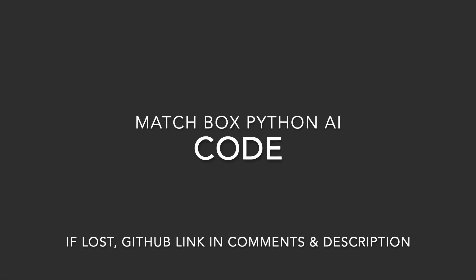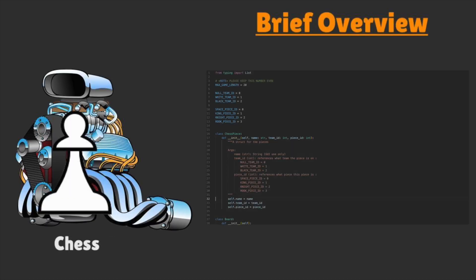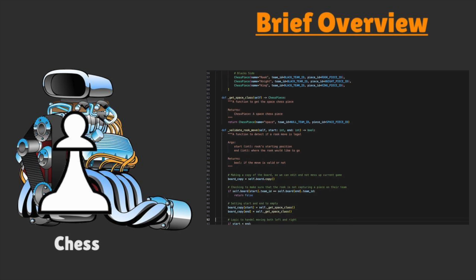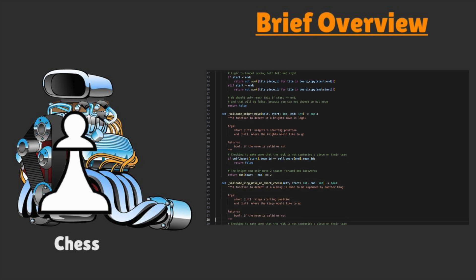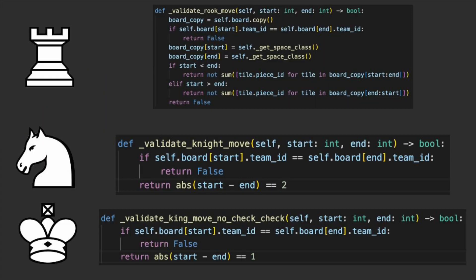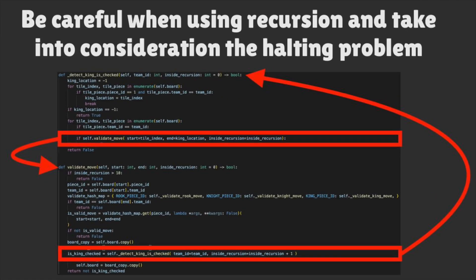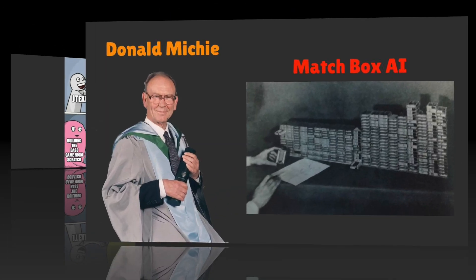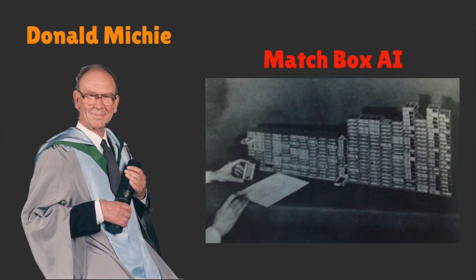Let's now transition over to our code to find out how we can make this for ourselves. To start, we'll need to build a chess engine, which is surprisingly the hardest part of the code due to there being no third-party packages to import 1D chess. The only pieces we have are the rook, knight, and king, and their moveset are only back and forth. However, there is some spooky recursion logic to detect if a move places the user in check. The reason why this is called Matchbox AI is because Donald Michie did all this coded logic, but with actual matchboxes.